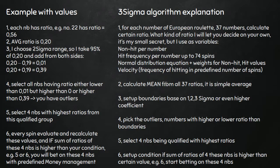Another valuable variable is the normal distribution equation, plus weights for non-hit and hit values. In general, if there is a certain non-hit value for numbers in the last 37 or 74 spins, I assign certain weights for non-hit and hit values per number. I'll come back to this point later.